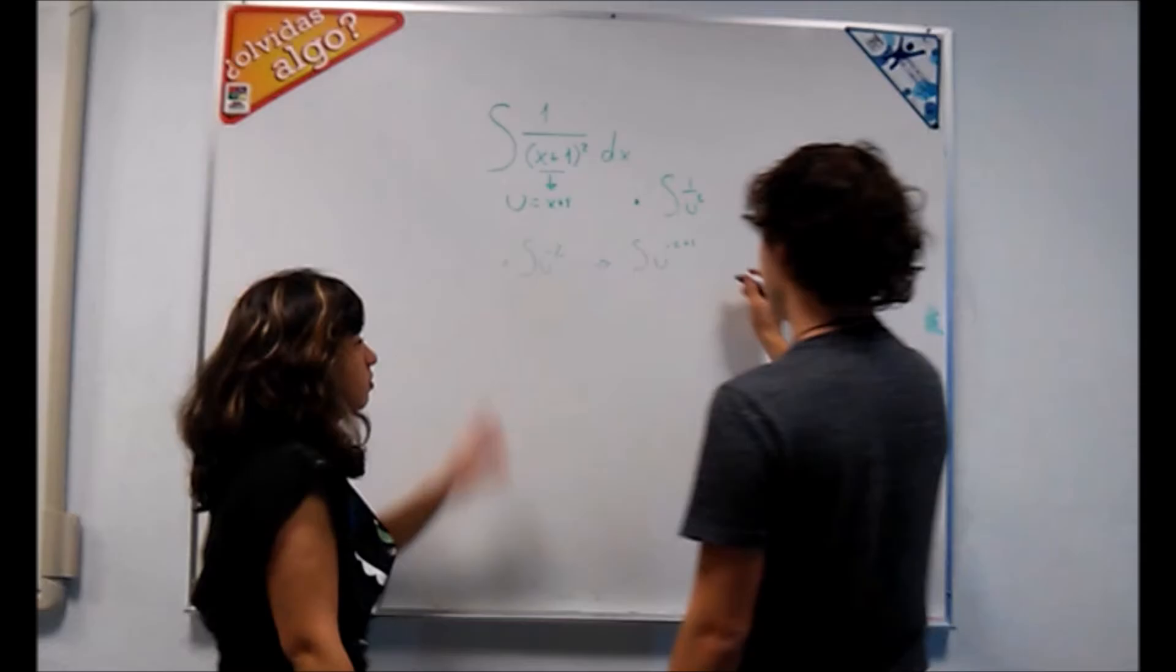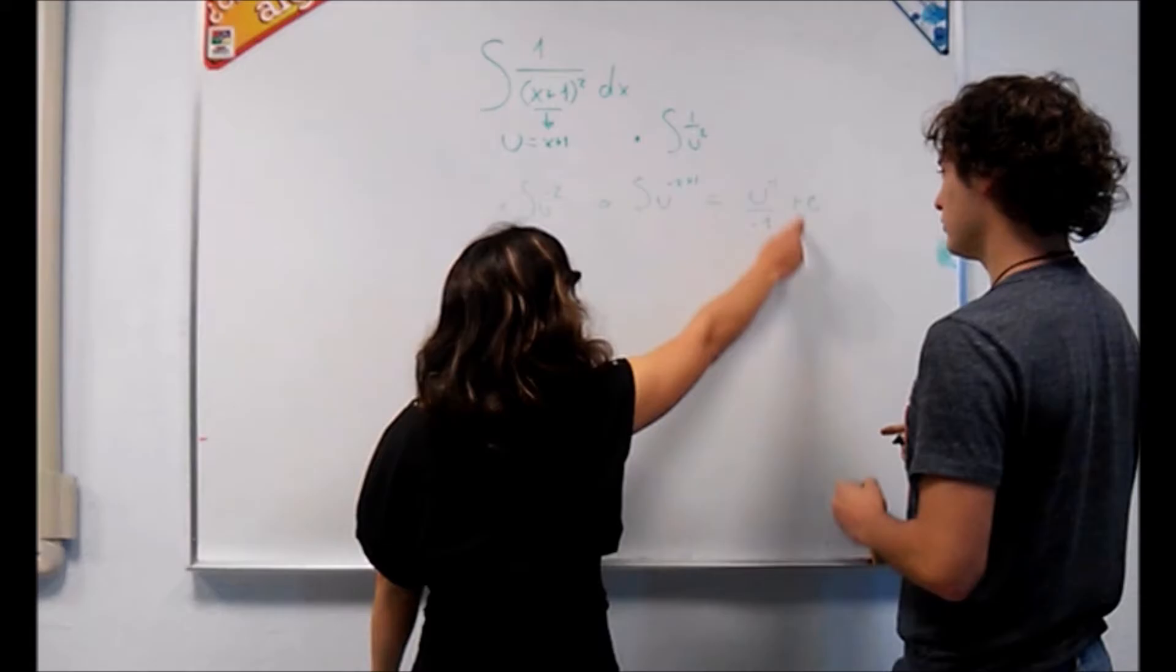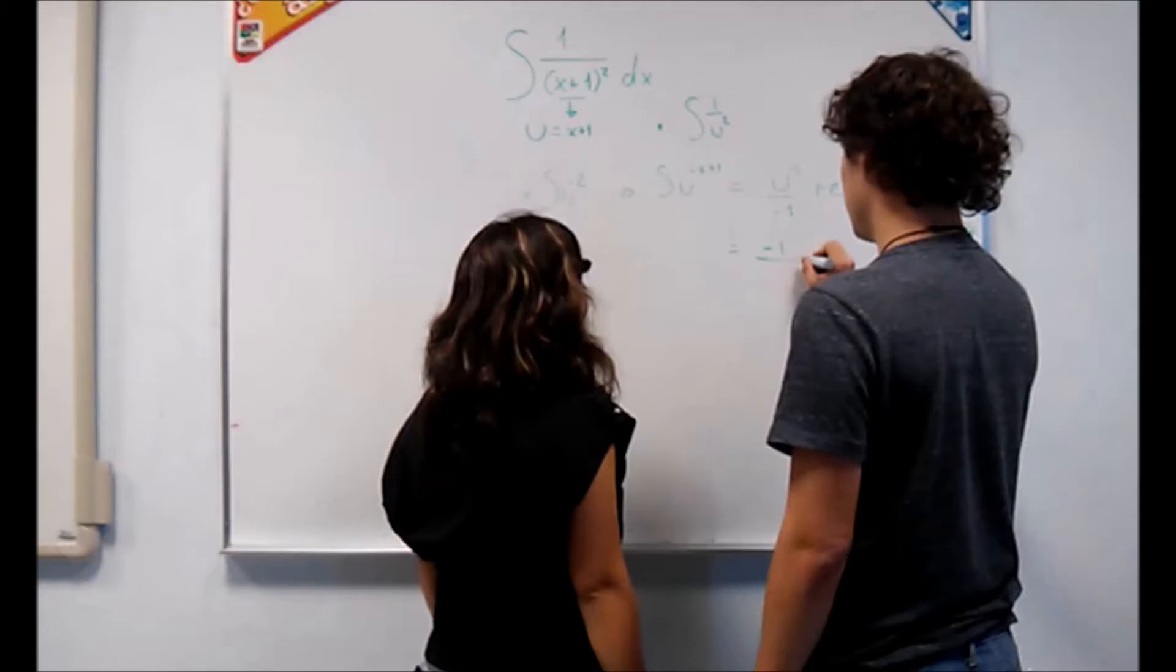We are going to take the antiderivative. It's going to be u to the negative 1 divided by negative 1. After that, we are going to rewrite with u in the denominator.